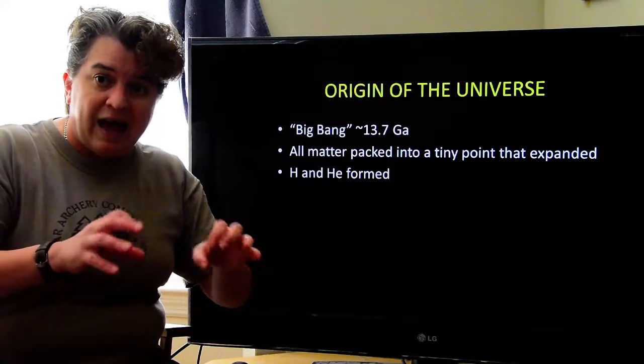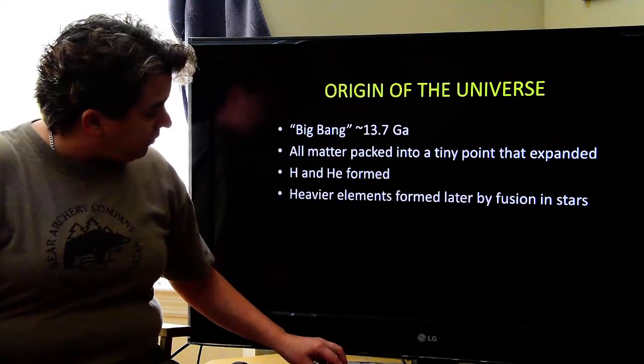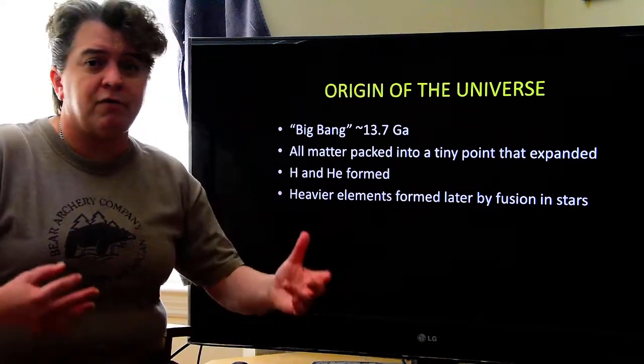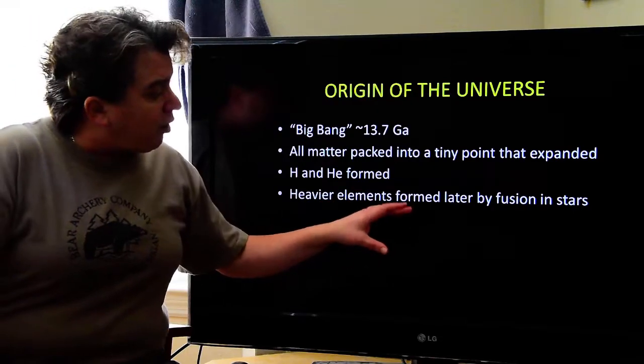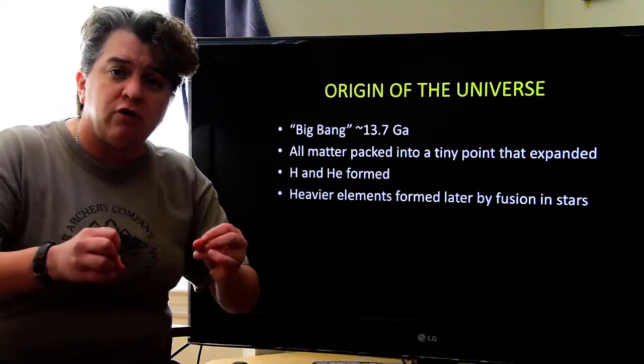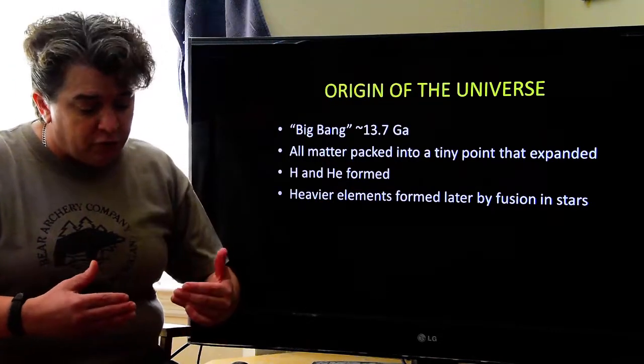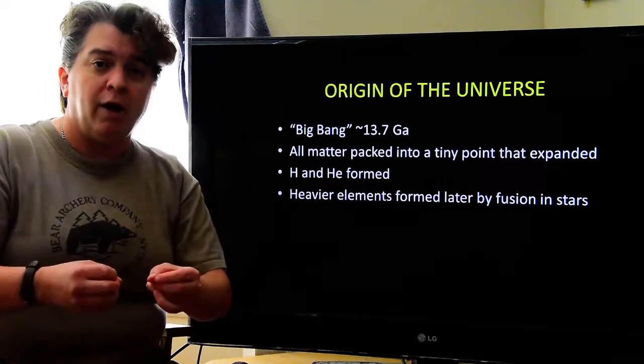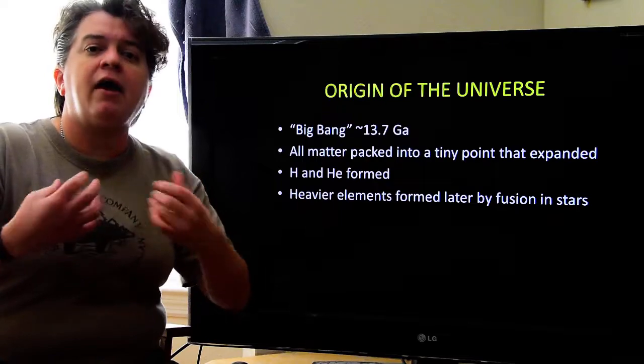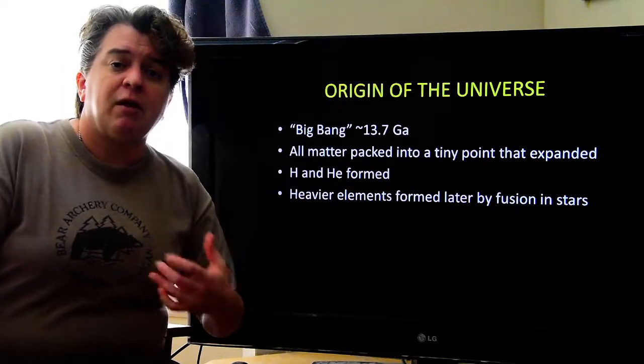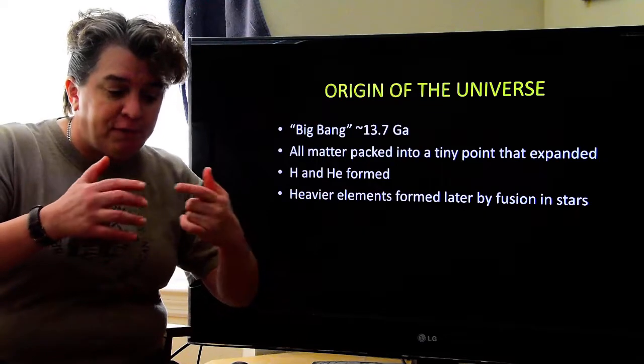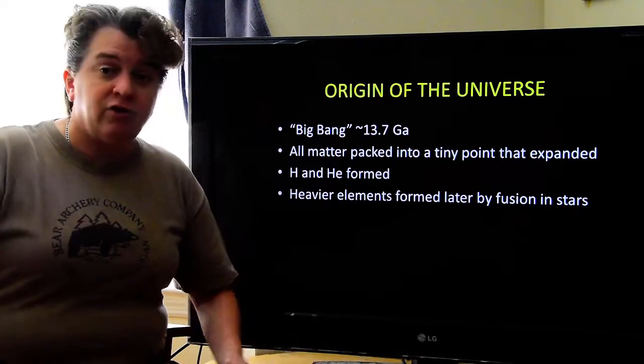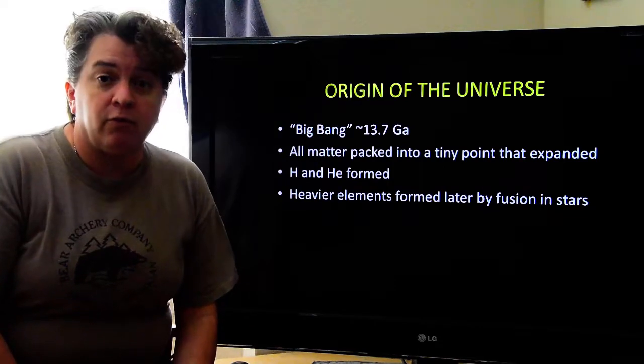Those are the original atoms that existed. The heavier elements, the things like the carbon and the sodium and the oxygen and all that stuff, are formed later by fusion in stars. And what fusion is, is where two atoms get together and become one. And when that happens, energy is released. So, for example, in our star, hydrogen is fusing together to make helium and creating the energy in the form of heat and light that we see.